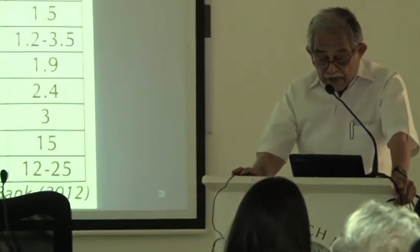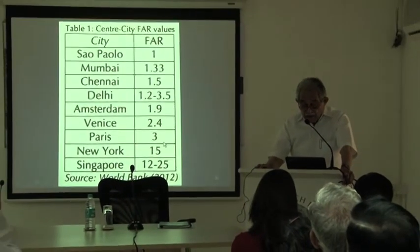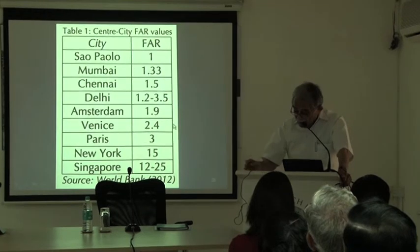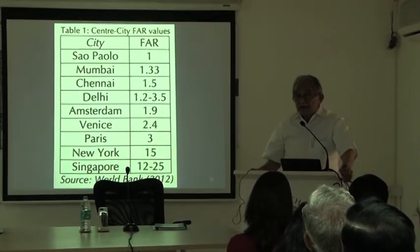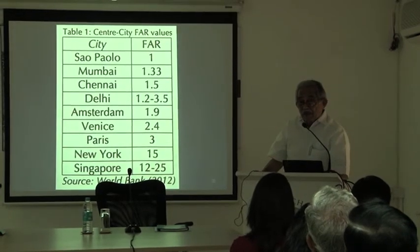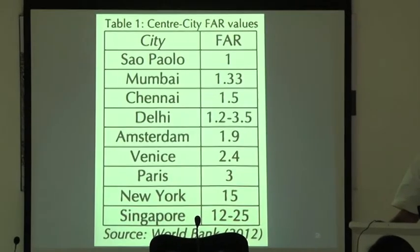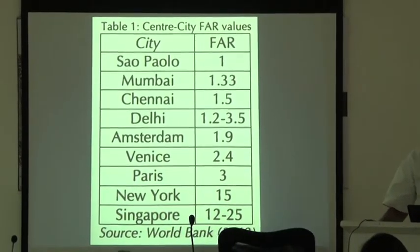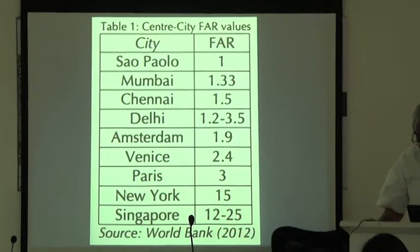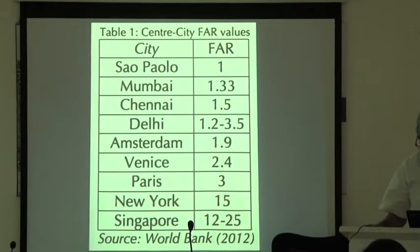Notice that Mumbai is 1.33, Amsterdam is 1.9, Venice 2.4, Paris is 3, but New York is 15. What the World Bank keeps telling us is that if you look at these numbers, you will agree that the FSI in Mumbai is too low and should be pushed up. The current normal limit of FSI 4 has been arrived at on the strength of presentations like this by the World Bank. And for educational institutions and hotels, the FSI permitted is much higher than 4.